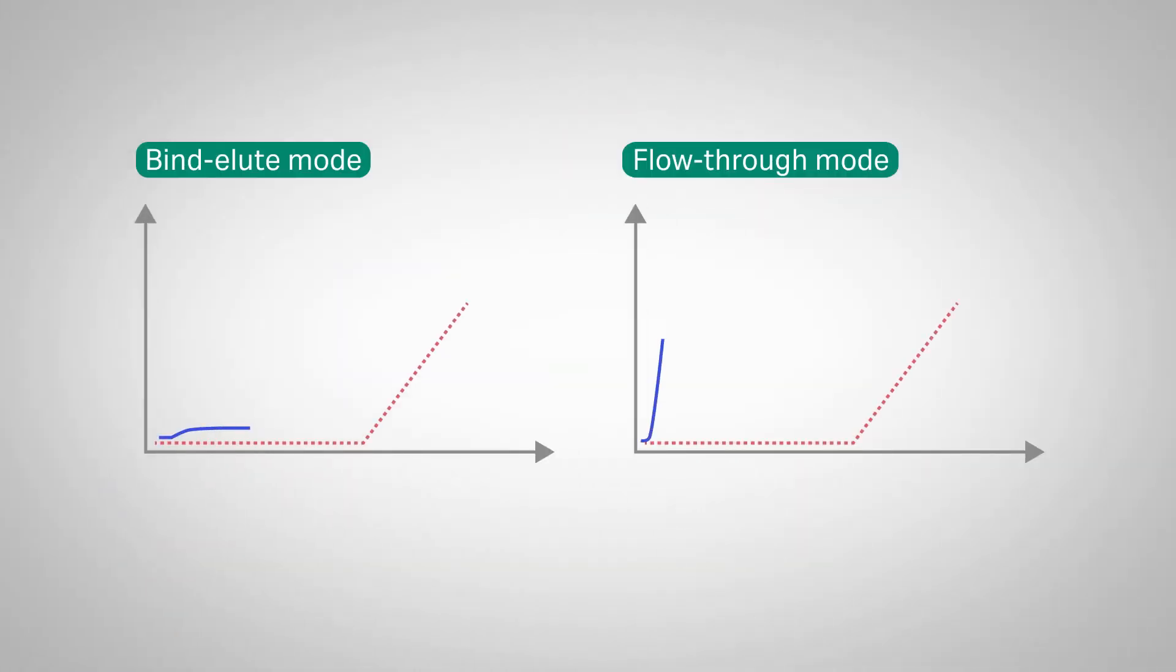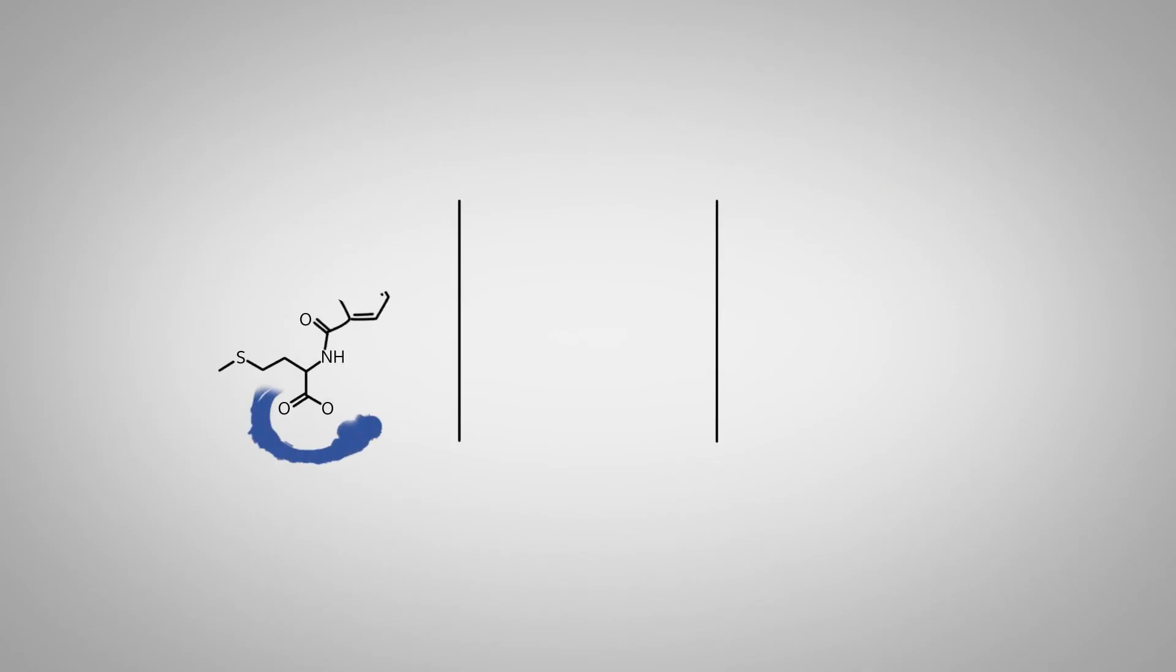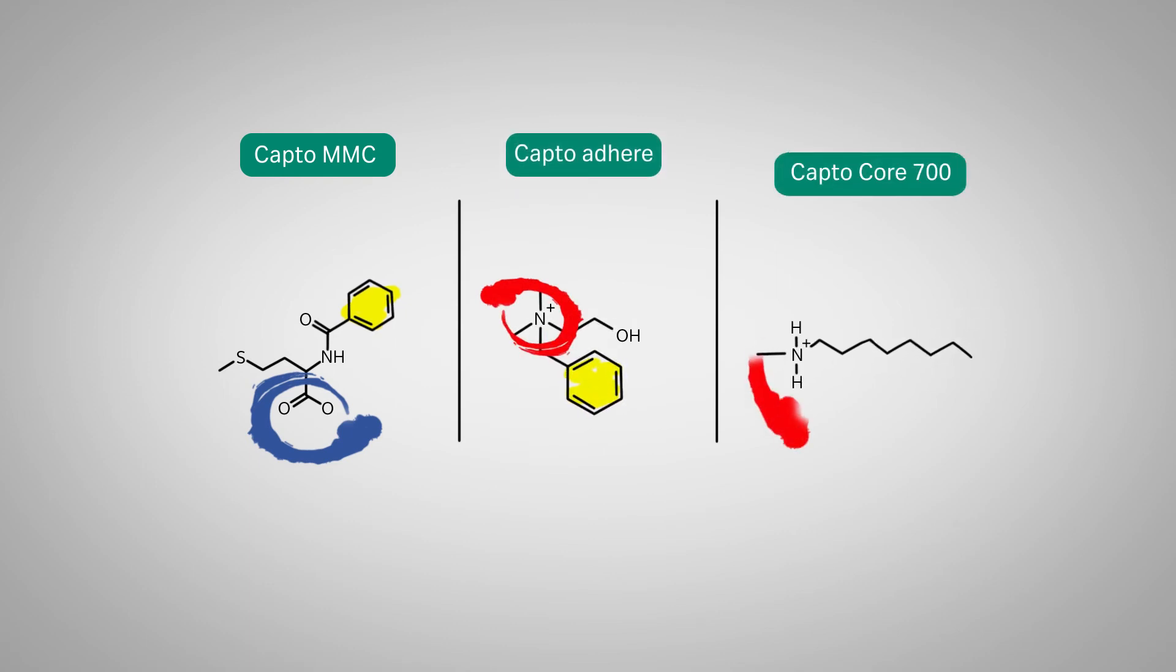Multimodal chromatography can also be performed in flow-through mode, where impurities bind to the resin while the target is collected in the flow-through. As with bind-elute mode, multiple types of interactions are involved in binding of the target.